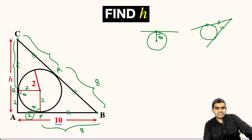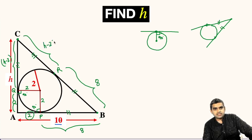This distance CQ will be h minus 2, because h is this entire length CA, and 2 is the distance between points Q and A. So the remaining distance CQ will be h minus 2. So this length will also be h minus 2.